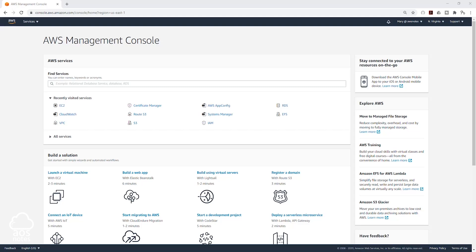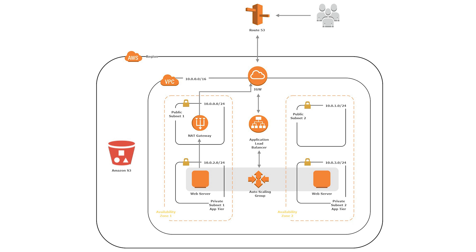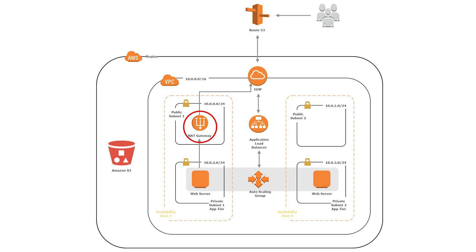Hello and welcome back to another lecture. In this lecture, we are going to look at how we can eliminate a single point of failure with our NAT gateway. This is our architecture. We have two availability zones and we have our NAT gateway in one of those availability zones, and that NAT gateway is serving the private subnet in each availability zone.